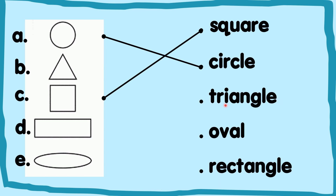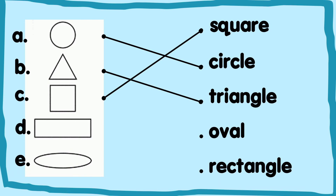Triangle. And oval. Where is the oval? Yes, you found it. It's E. Oval. So you make a line until here.